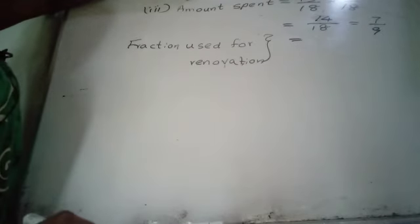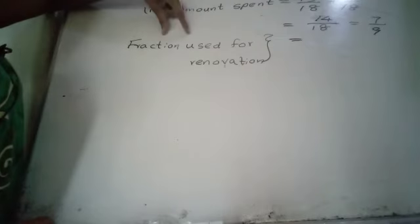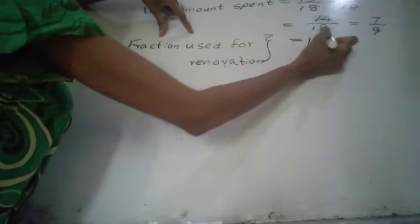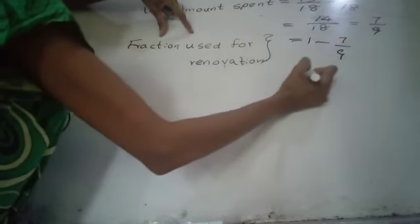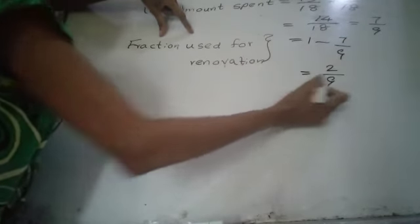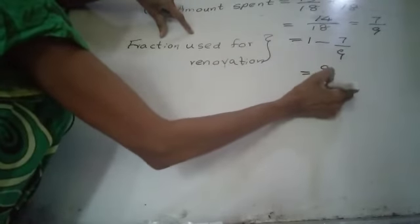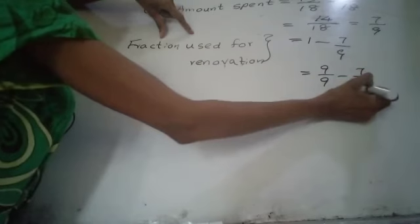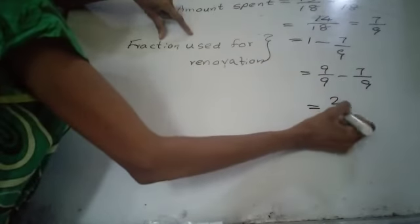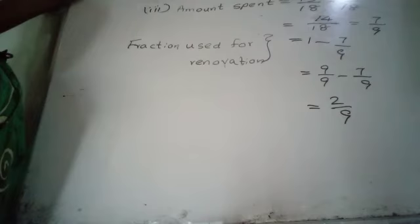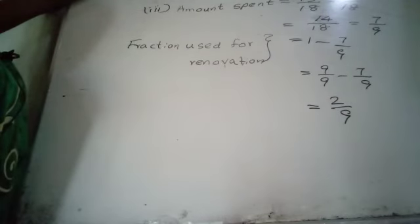The amount remaining after purchasing the books was used to renovate the community center. The fraction used for renovation is equal to 1 subtract 7 over 9. Writing 1 as 9 over 9, we get 9 over 9 subtract 7 over 9, which equals 2 over 9.